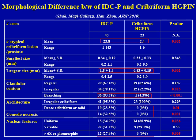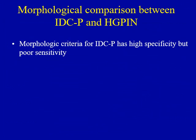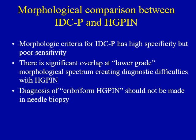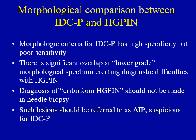However, these differentiating features are present only in a subset of intraductal carcinoma. A very important message from the study is that the morphologic criteria for intraductal carcinoma have high specificity but poor sensitivity, and this can pose significant overlap at the lower-grade morphological spectrum, creating diagnostic difficulties with high-grade PIN. Because of such overlap, it is important not to make a diagnosis of cribriform high-grade PIN in needle biopsy. Instead, such lesions should be referred to as atypical intraductal proliferation, suspicious for intraductal carcinoma of the prostate.